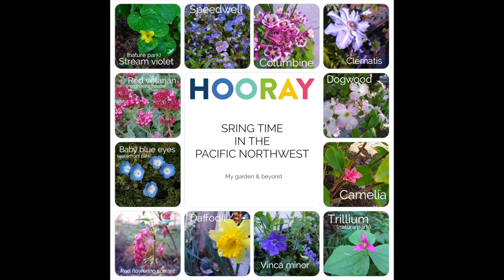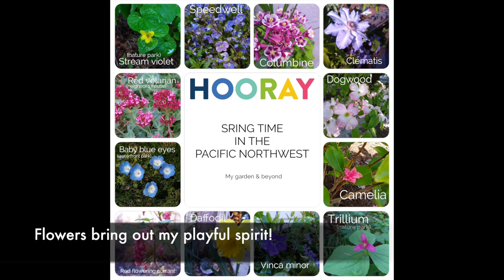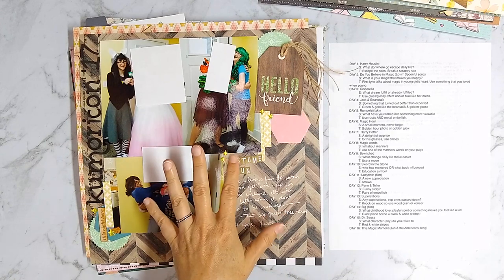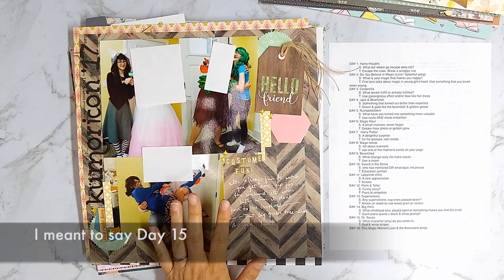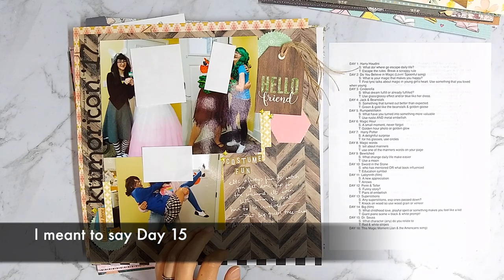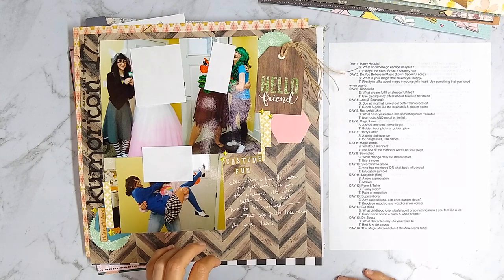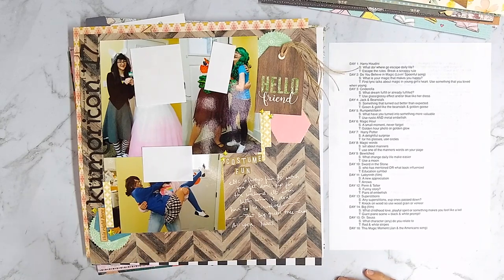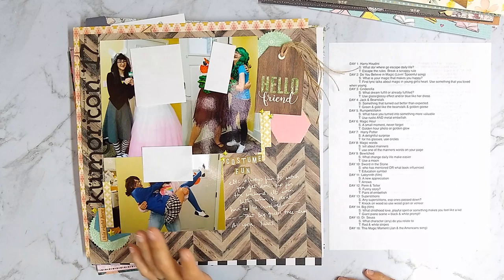Day fourteen was about the film Big, a Tom Hanks film. The story prompt was what childhood love do you have or what brings out your playful spirit, and the technique prompt was to use black and white since there's a giant piano scene in the movie. Day fifteen was Dr. Seuss — the story prompt was what character do you relate to, and the technique prompt was to use red and white stripes. I talked about the characters my daughter and her friend like to dress up as when they go to a Japanese animation celebration they've done for many years.